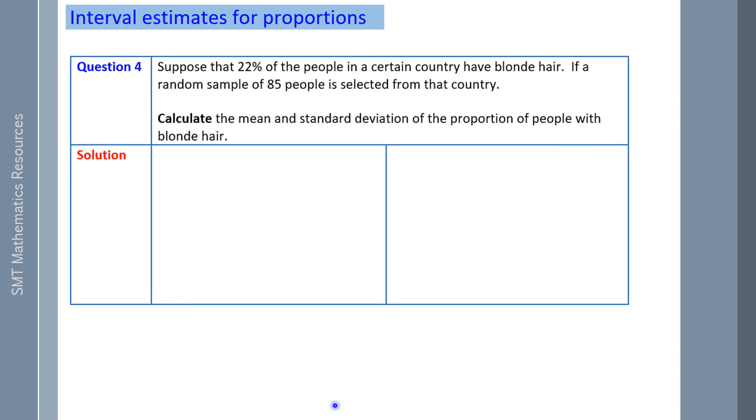In question 4, suppose that 22% of the people in a certain country have blonde hair. That's the proportion of successes in the population. That's P. The random sample of 85 people is selected from that country. Calculate the mean and standard deviation of the proportion of people with blonde hair.